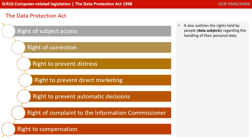The Act also outlines the various rights held by people regarding the handling of their personal data. As a data subject — whether you're using social media sites or online shopping sites — you have the right of subject access and the right of correction: you can request any data held on you and demand it be corrected if inaccurate. You have a right for your data to prevent distress, a right for it not to be used for direct marketing, and a right to prevent automatic decisions about yourself being made purely on the basis of data without human interaction. You also have the right to lodge a formal complaint with the Information Commissioner's Office and the right to compensation if a flaw is found.